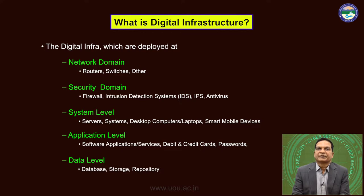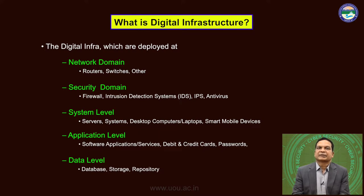Under the security domain, the security devices are the firewall, intrusion detection systems, intrusion prevention systems, antivirus, and UTM — the Unified Threat Management device. These are all devices to be deployed, maybe one or maybe in combination, at the security domain. These devices also come under the digital infrastructure at security domain level. Similarly, at the system domain, the devices are servers, desktop computers, laptops, and smart mobile devices.